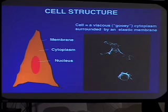As you probably remember from elementary school and high school, you tend to think of the cell as having a membrane and sort of a viscous, gooey cytoplasm — a cell with a viscous, gooey cytoplasm surrounded by an elastic membrane, or as I always like to say, a water balloon filled with molasses.